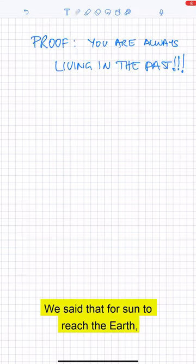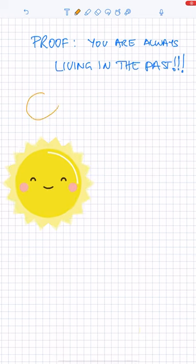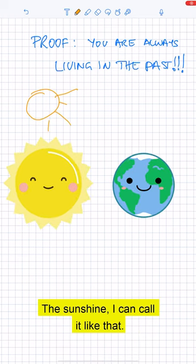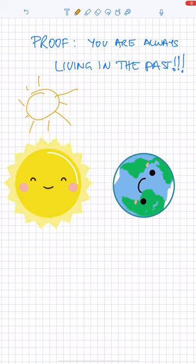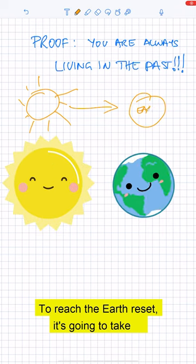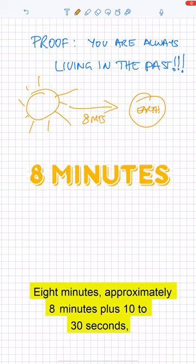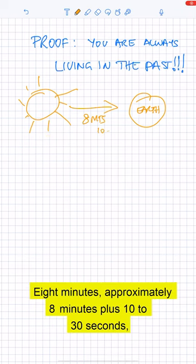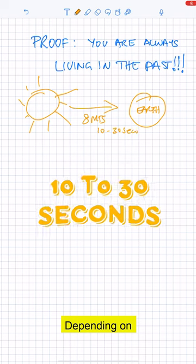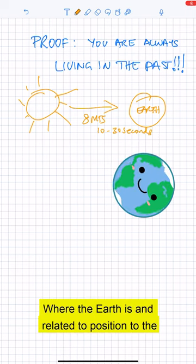We said that for sun to reach the earth, the sunshine I can call it like that, to reach the earth we said it's going to take eight minutes, approximately eight minutes plus 10 to 30 seconds depending on at what point of the country you are and where the earth is in relative position to the sun.